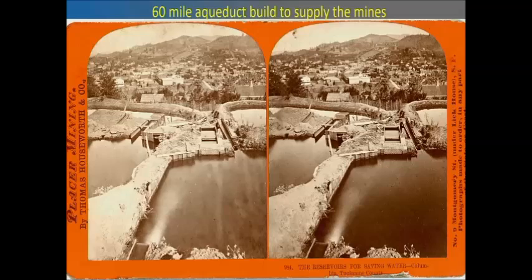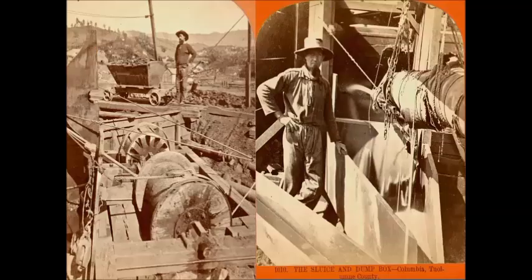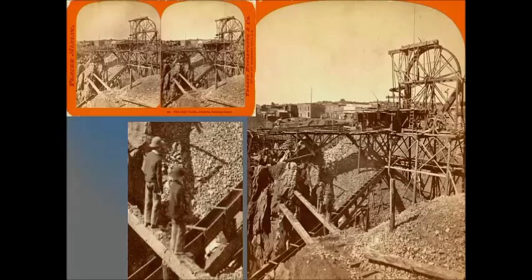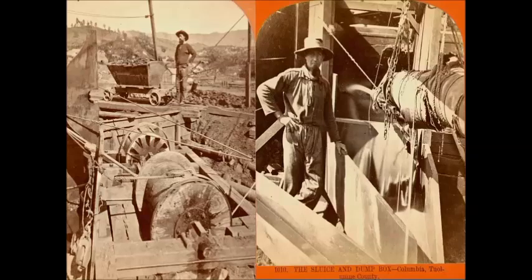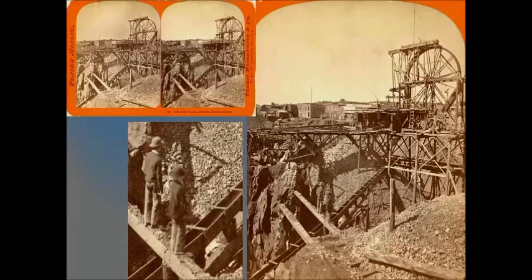Here you can see the reservoirs above the town. This is the town of Columbia, and actually this is the river channel running right through there. Once they got the water, there were a number of ways they could use it. On the right they've got a hose with water and they're using that at the dump box to wash and flush the gold. In the picture on the left, they have constructed a water wheel — an interesting early water wheel with a cover over the top so it's like an enclosed water wheel.